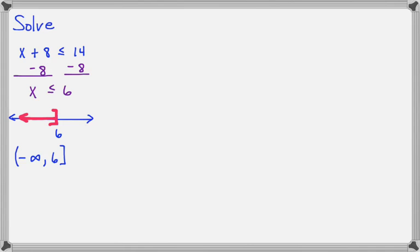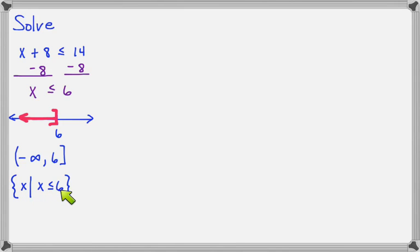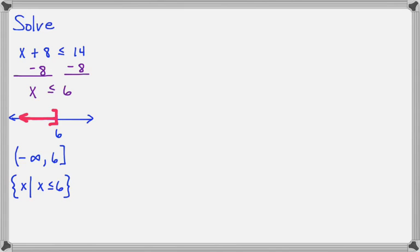Now let's look at what's called set builder notation. Set builder notation comes in curly braces and looks like this. You read it as: the set of all x's such that x is less than or equal to 6. Notice that this inequality is just a repeat of what we already found when we solved. So all you need to do when asked for set builder notation is put the inequality inside the curly braces — it's the same one we already found.